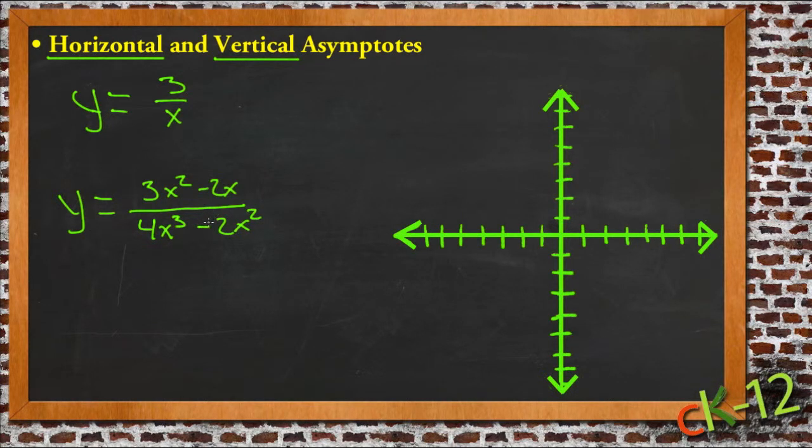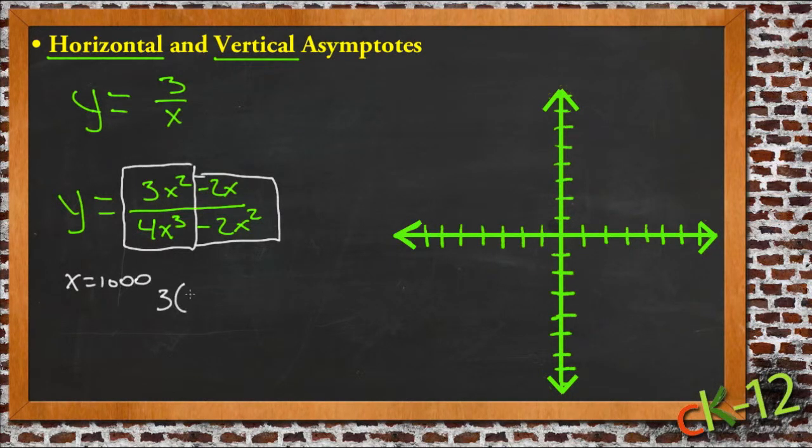Now, if x is just 0 here, then we'd have 3 times 0 minus 0 over 0 minus 0, so you'd have 0 over 0, and that wouldn't be terribly exciting. But as x gets to be a very big value, the bigger the values get, the faster these values over here increase beyond the values of these values over here. So if you can imagine, say for instance, x is 1,000. If x is 1,000, then we'd have 3 times 1,000 squared minus 2,000.